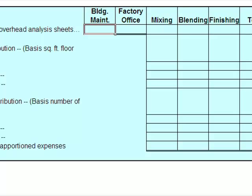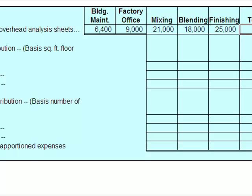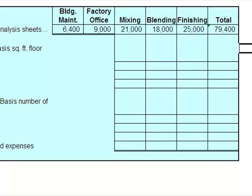Building maintenance has a total of $6,400 in costs. The factory office has $9,000 — this is what I'm going to distribute out. Mixing already starts with $21,000. Blending begins with $18,000. You can see where I'm just grabbing these numbers off of the problem. Finishing has $25,000. I'm going to add all of these up to make sure that I account for all my costs.